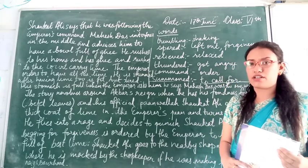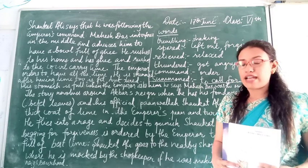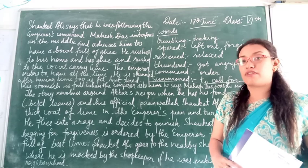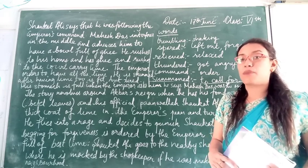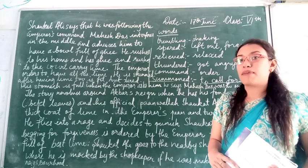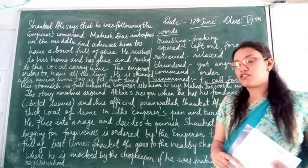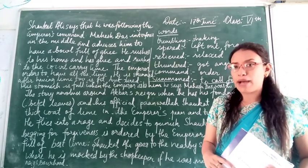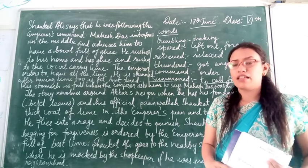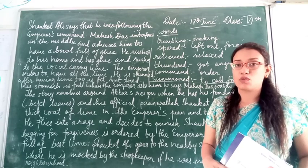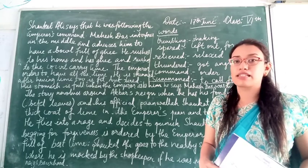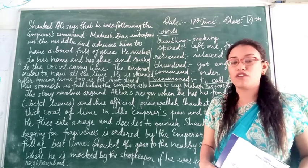When Akbar has the paan, it is very bitter and he throws his anger at the Paanwala and orders him to be punished. The Paanwala begs for forgiveness. Instead of punishing him directly, Akbar tells him to get the best lime possible — a sack full of lime. Shaukatali goes to the market to get the best lime. While buying the lime, Shaukatali is approached by the shopkeeper who asks why he is buying lime. The Paanwala replies that he was told by the Emperor to buy it.